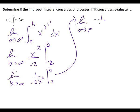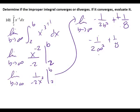The limit as B approaches infinity: one over negative two B squared minus — what is 2 squared? Four. Four times two is eight. The double negative goes positive. So I get negative one over two infinity squared plus one eighth. I have one divided by a giant number — that becomes zero. So my final answer is one eighth.